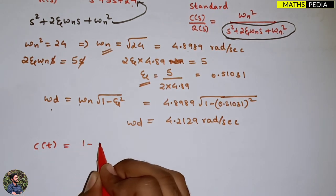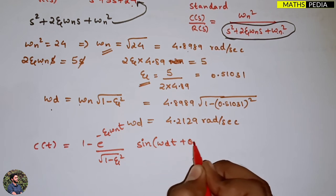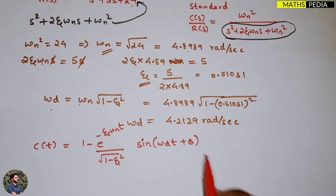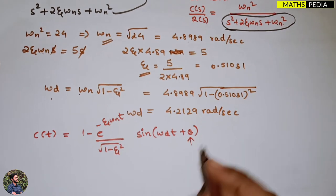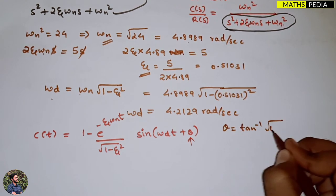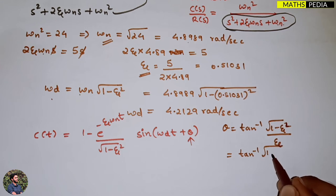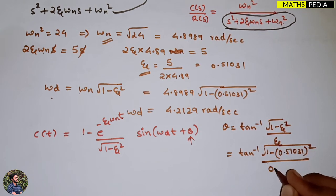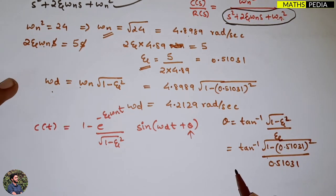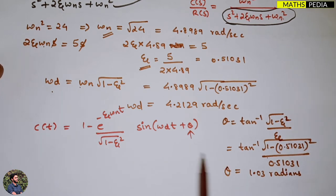The output response c(t) for a unit step input is: c(t) = 1 − [e^(−ζωnt) / √(1−ζ²)] · sin(ωdt+θ). We still need θ. The formula is θ = tan⁻¹(√(1−ζ²) / ζ). Substituting ζ = 0.51031: θ = tan⁻¹(√(1−0.51031²) / 0.51031) ≈ 1.03 radians. Note this is in radians, not degrees.